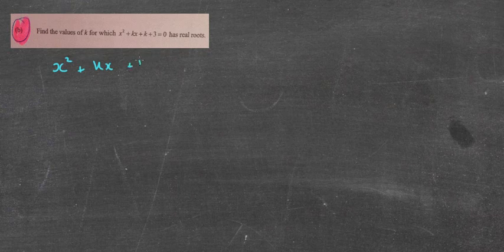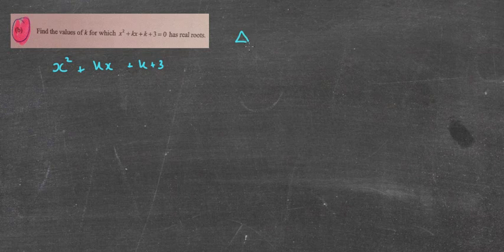The next one: find the values of k for which the equation has real roots. It doesn't ask me what the roots actually are — this is about whether they're real or no real roots. For real roots, delta (the discriminant) is greater than or equal to 0. We know the discriminant equals b squared minus 4ac. My b is k, so it's k squared minus 4 times 1 times the whole of c in brackets, greater than or equal to 0.